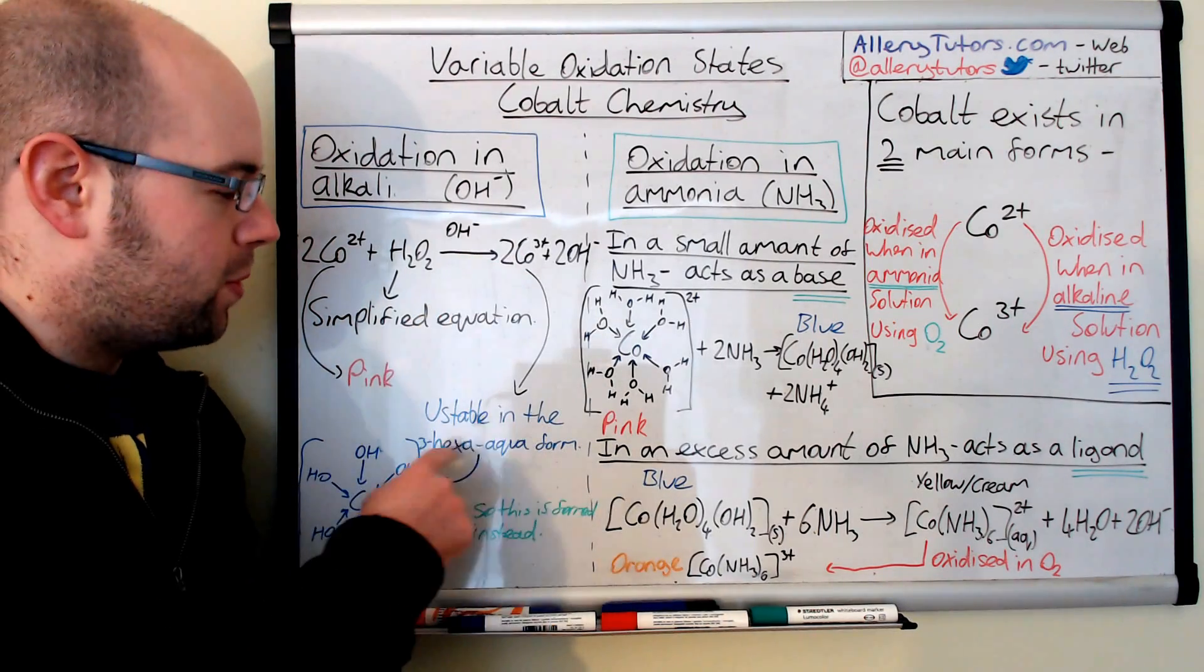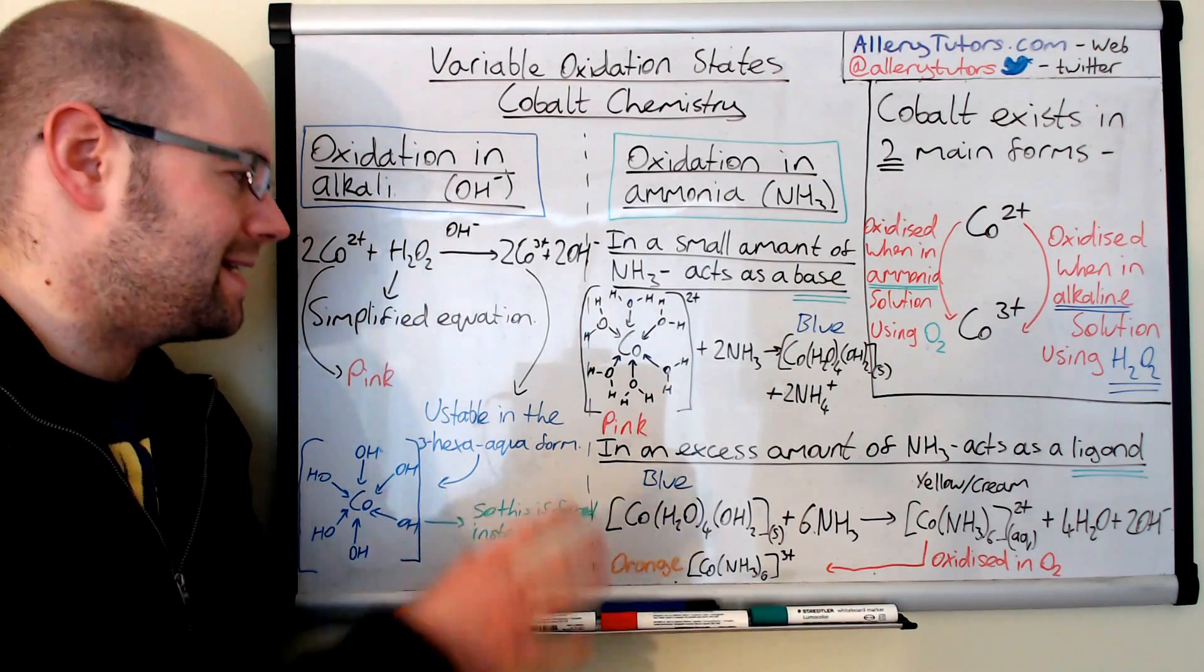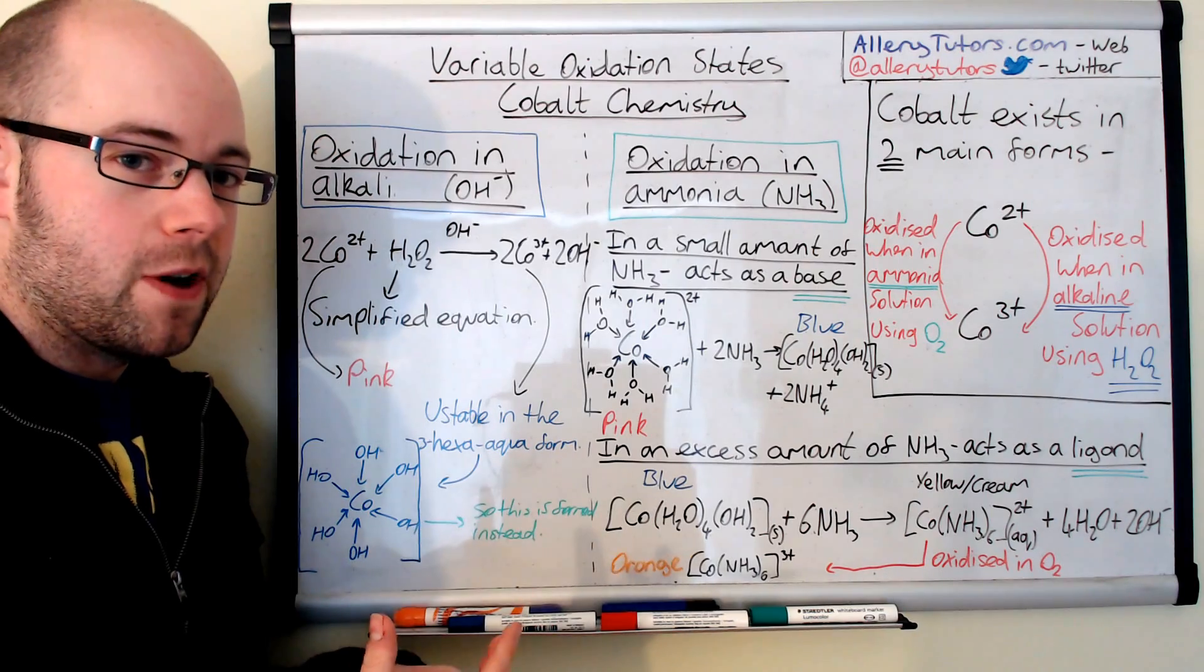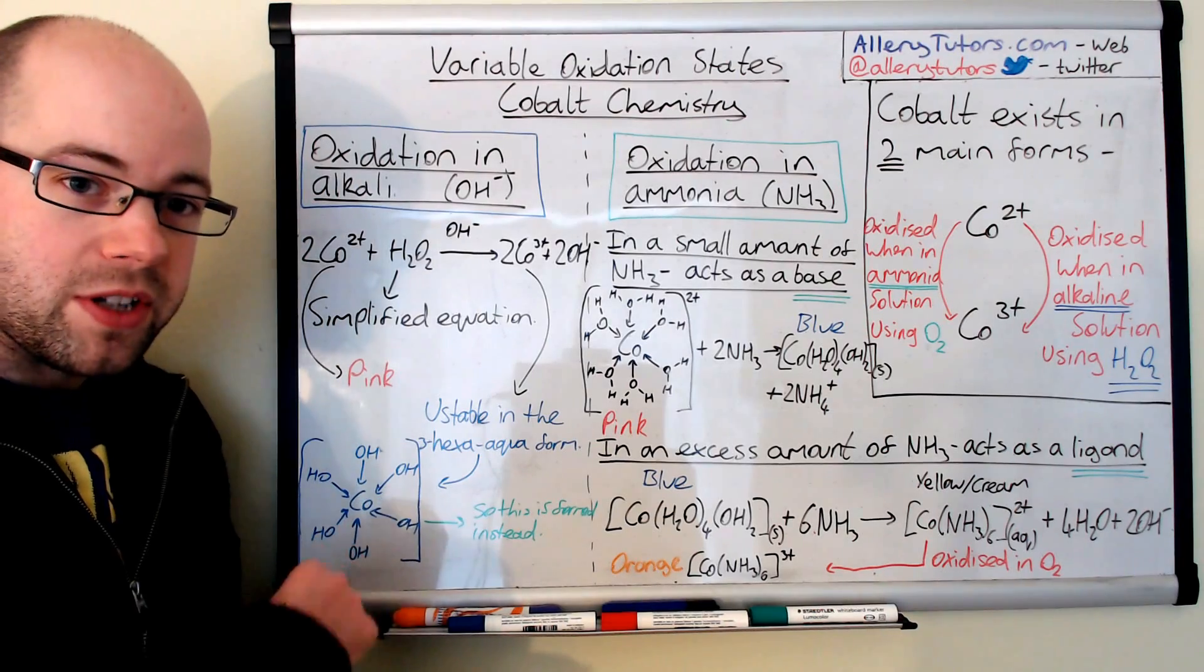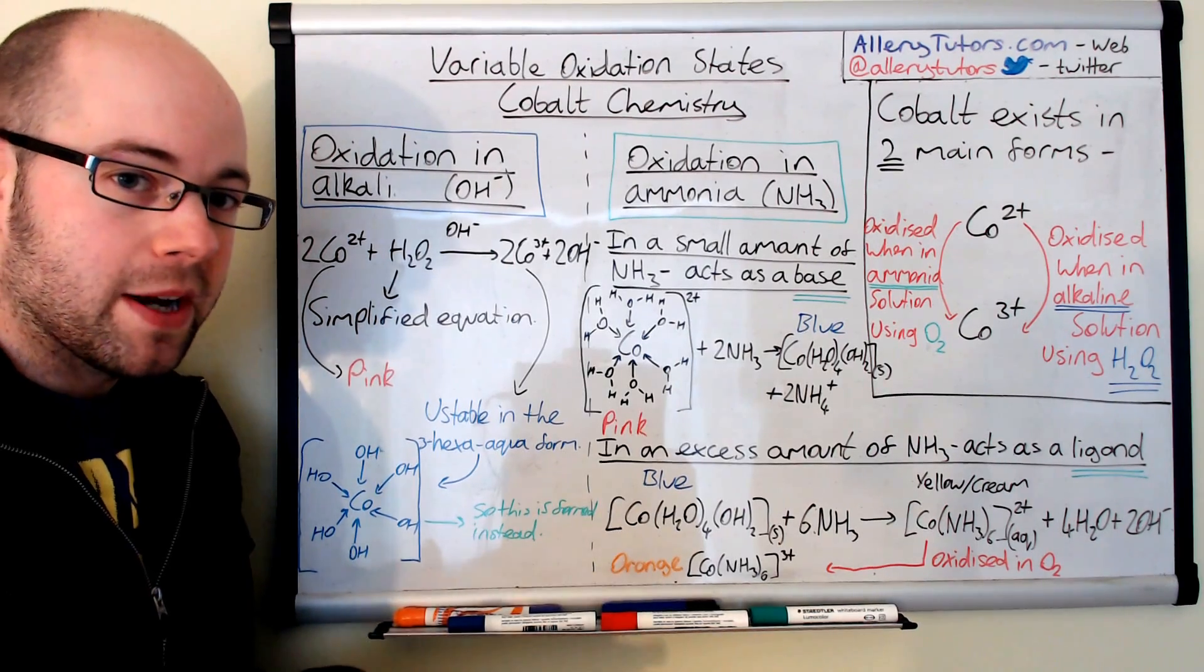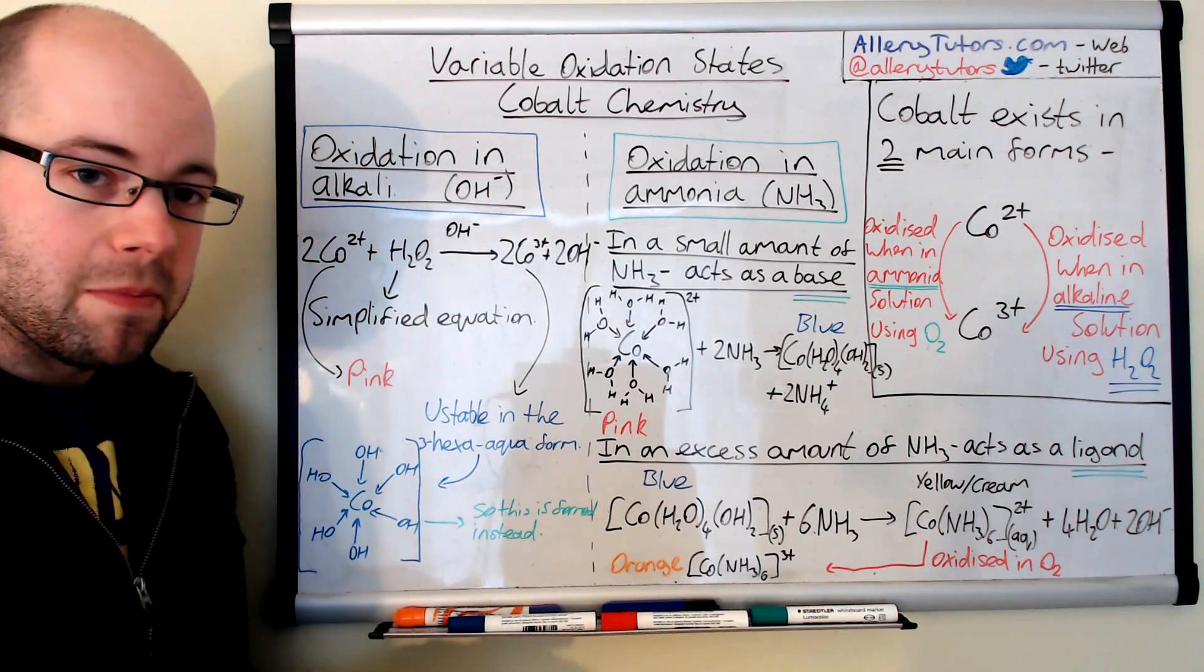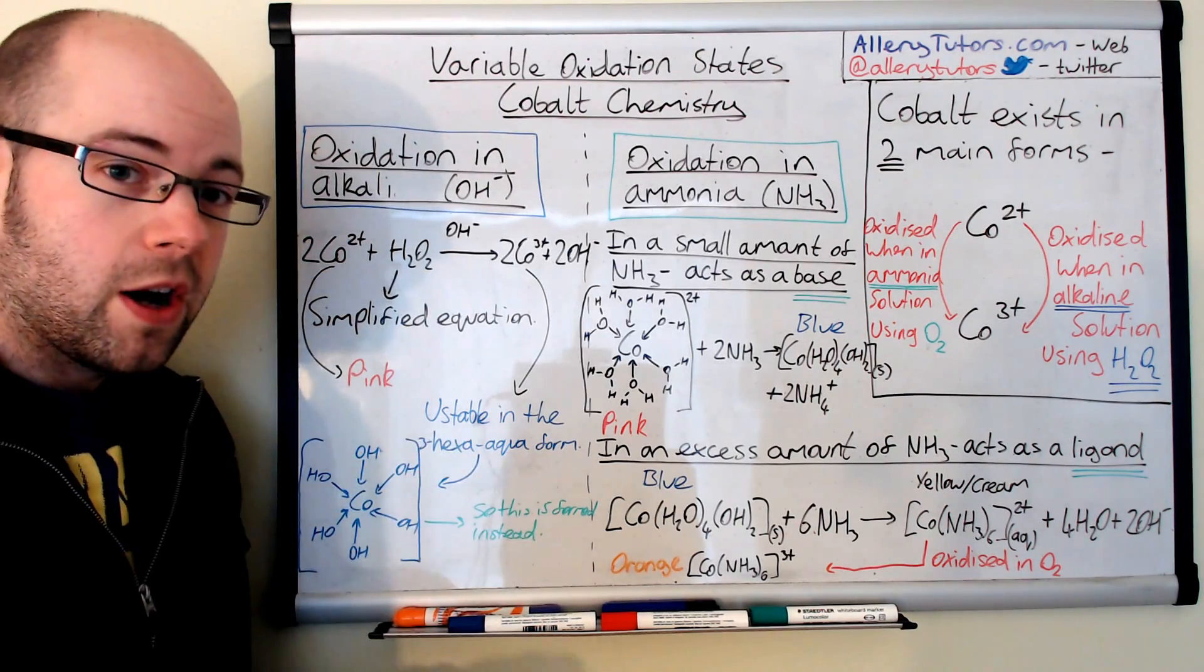However, cobalt 3 plus as a hexa aqua form is really, really unstable and actually doesn't actually exist in this form when we react it and actually what normally exists and what we normally form because of the presence of the hydroxide ion, if we have enough of them, then we will form this, which is the cobalt hexahydroxide complex. So this is your OH. So instead of having six waters surrounding your cobalt, you have six OH minuses. And because each hydroxide has got a minus charge, the cobalt has a 3 plus charge. Each hydroxide has got a minus charge, so 3 plus complex originally plus the six minuses will give an overall charge of 3 minus.